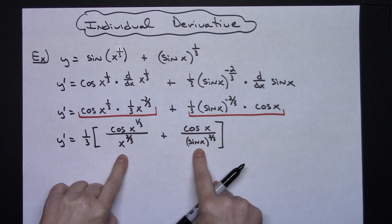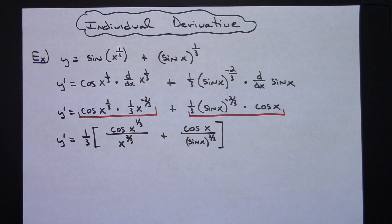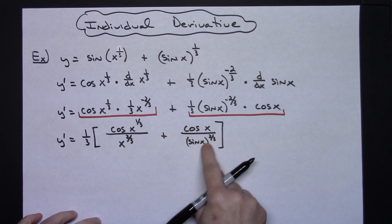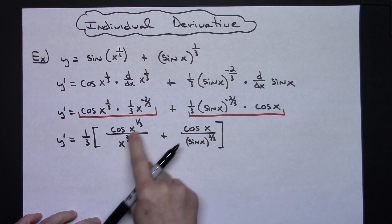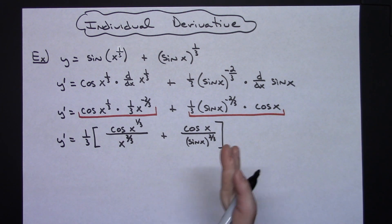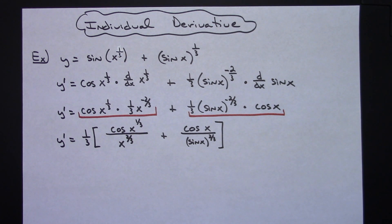That's a perfectly acceptable answer. If you want, you can get common denominators inside the brackets to combine the terms, or leave them separate. Each can also be written using cube root notation — cube root of x squared and cube root of sine x squared. A pretty straightforward derivative with a couple of chain rules. Thanks for watching — if the videos are helping, don't forget to subscribe and share with your friends.